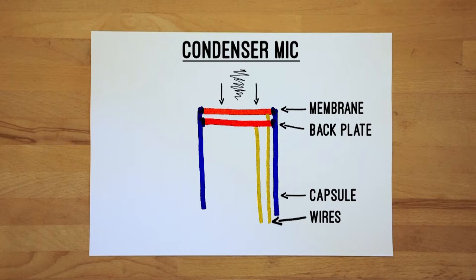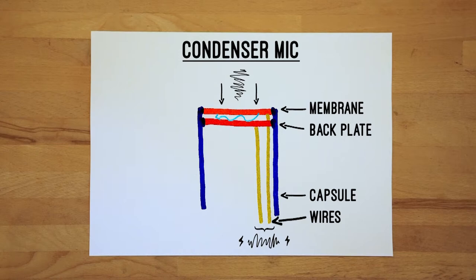When sound waves hit the membrane of the microphone, it moves, changing the amount of space between the membrane and the backplate. The closer the plates, the higher the amount, and the other way around. So here sound waves — mechanical energy waves — are transformed into an electric signal, which is the output of the microphone. This electric signal needs to be sent to a device called a preamp, to boost the signal up to the level you need.